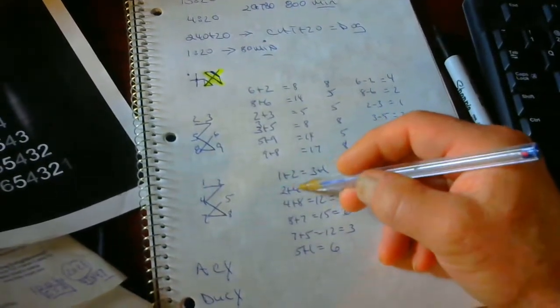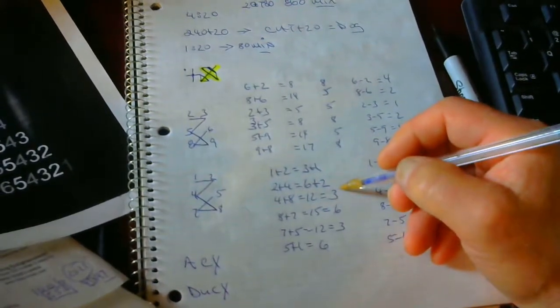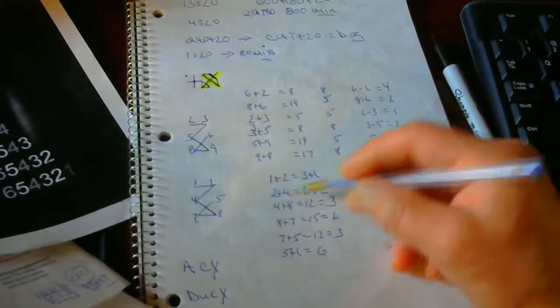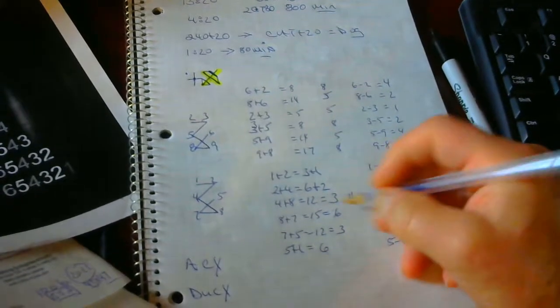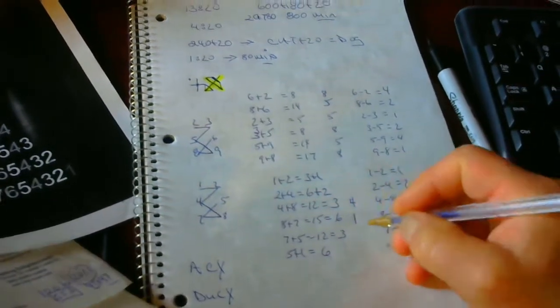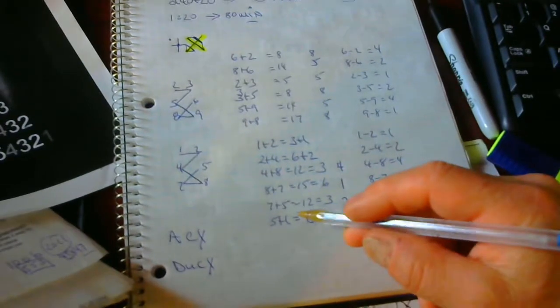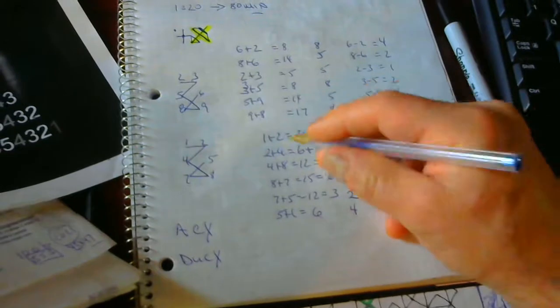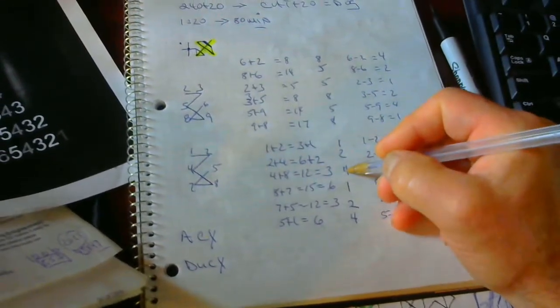1 plus 2, 2 plus 4, 4 plus 8, 8 plus 7. When we reverse it, it becomes 2 minus 1 is 1, 4 minus 2 is 2, 8 minus 4 is 4. 8 minus 7 is 1, 7 minus 5 is 2, 5 minus 1 is 4. So it'll be a total of 1, 2, 4, 1, 2, 4.